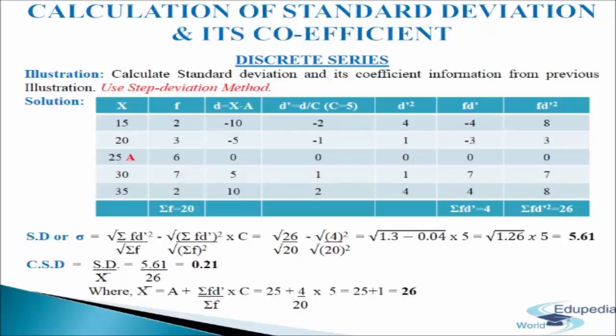In the next column we write fd dash — multiplying frequency with d dash. 2 into minus 2 gives minus 4; 3 into minus 1 gives minus 3; 6 into 0 gives 0; 7 into 1 gives 7; 2 into 2 gives 4. So sigma fd dash equals 4. In the last column, fd dash square — multiplying frequency with d dash square. 2 into 4 gives 8; 3 into 1 gives 3; 6 into 0 gives 0; 7 into 1 gives 7; 2 into 4 gives 8. Adding up gives sigma fd dash square equals 26.